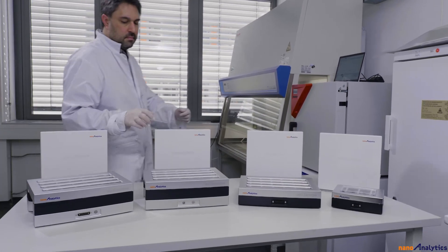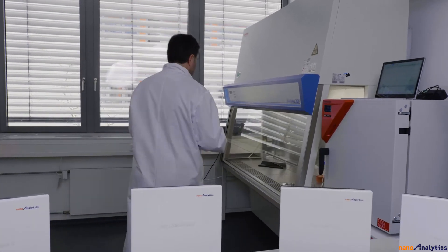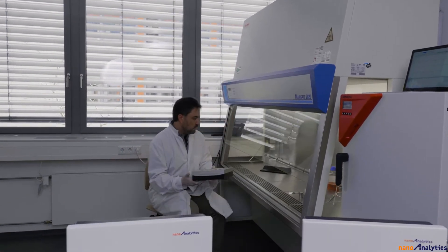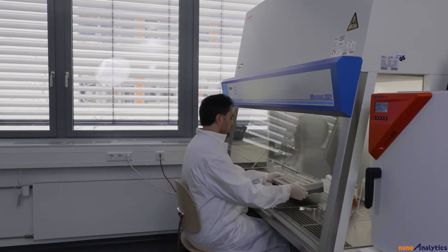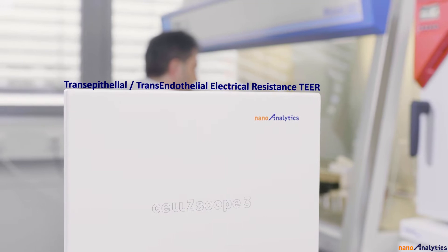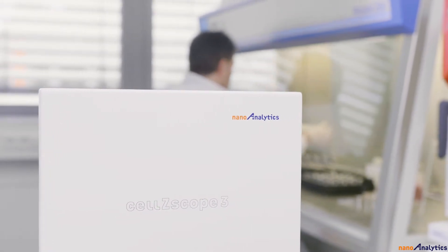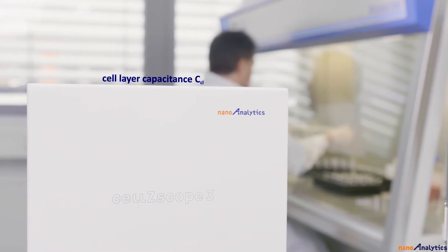The CellScope allows label-free monitoring of barrier-forming cells grown in standard culture inserts under physiological conditions. The trans-epithelial or trans-endothelial electric resistance and the cell layer capacitance are automatically recorded over hours, days, or even weeks.